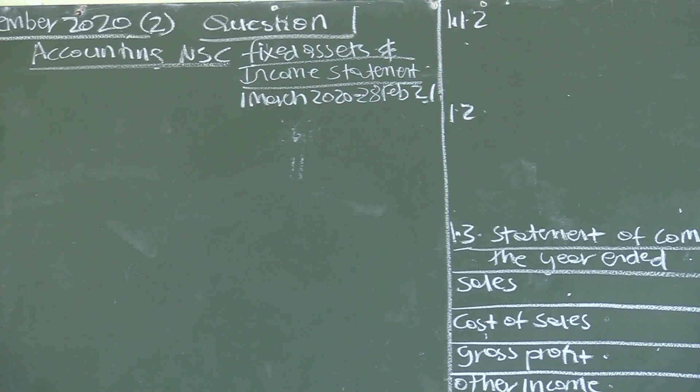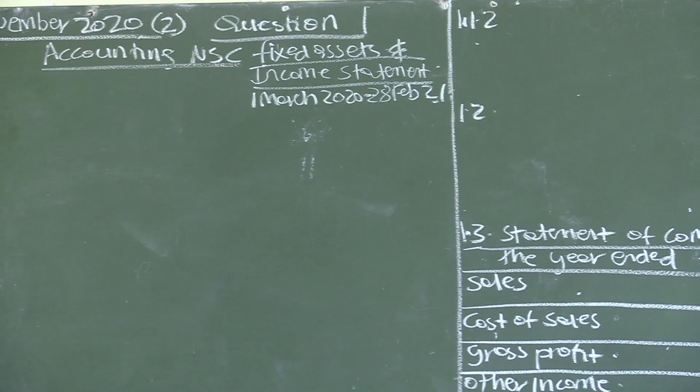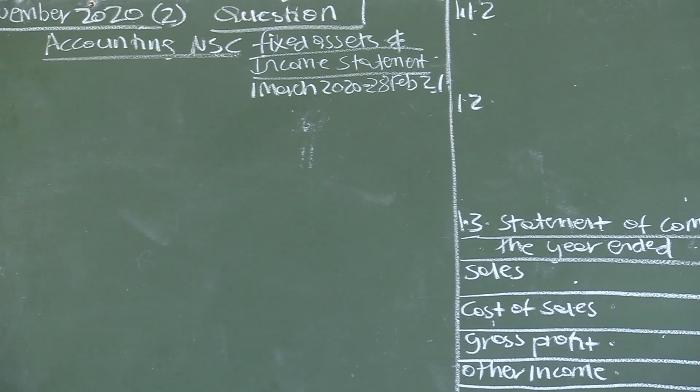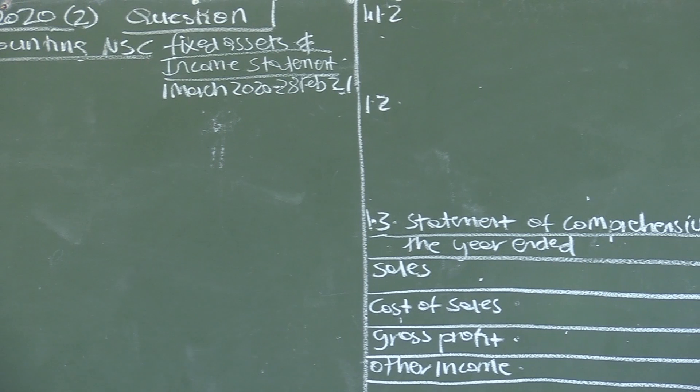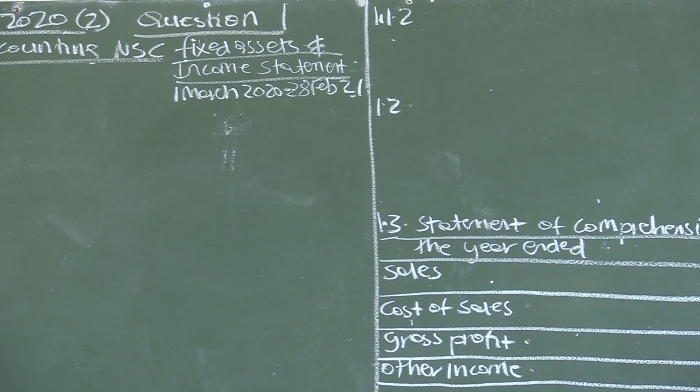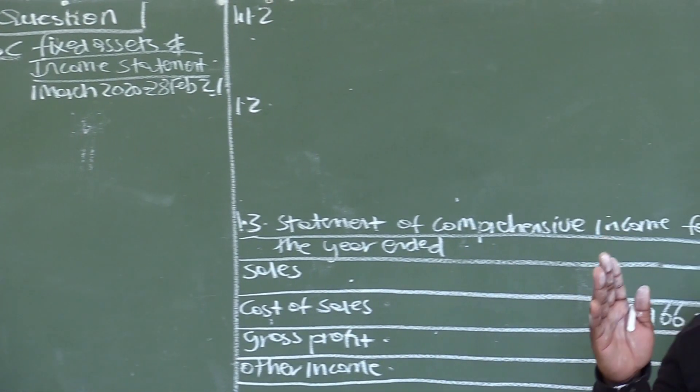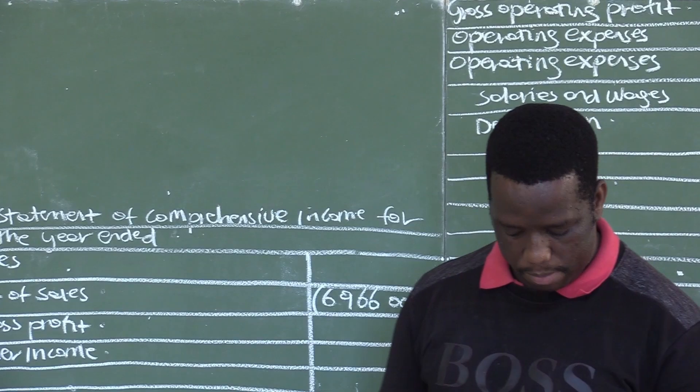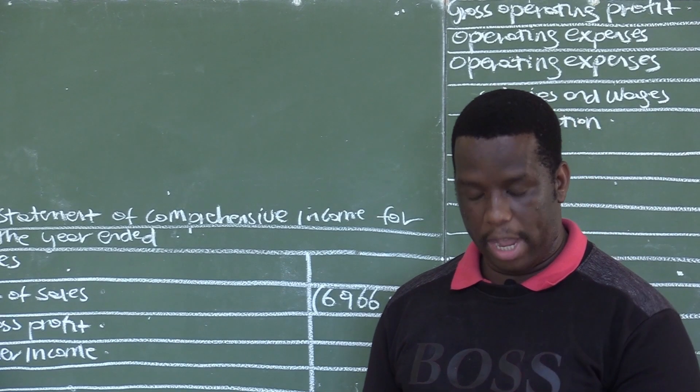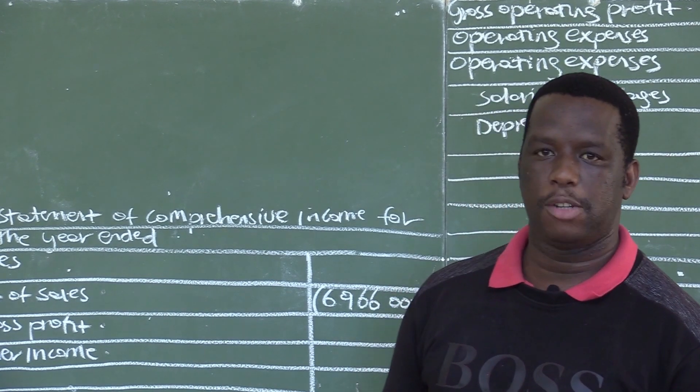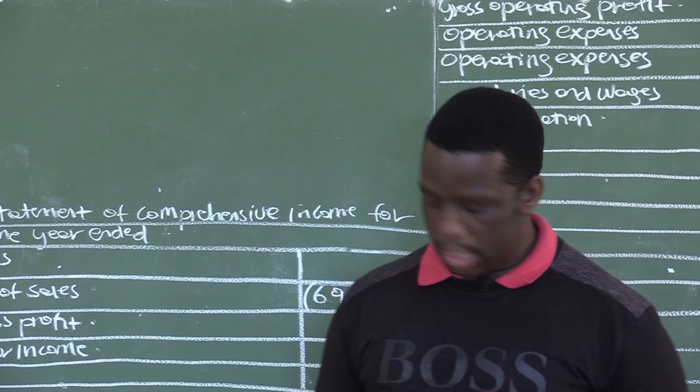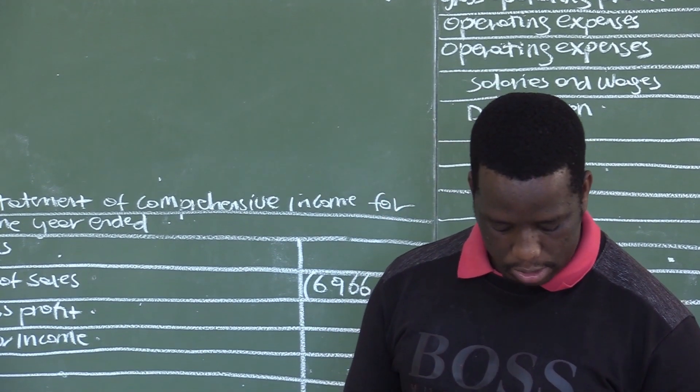Very important to note the financial period, the beginning and the end. The beginning is 1st March 2020 and the end is 28th February 2021. We are only dealing with transactions that relate to that period. It will be important that you have this question paper in front of you so you are able to follow this lesson.